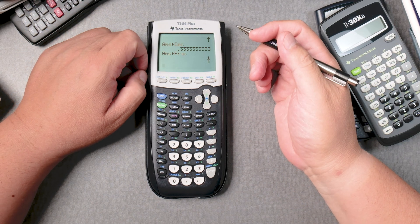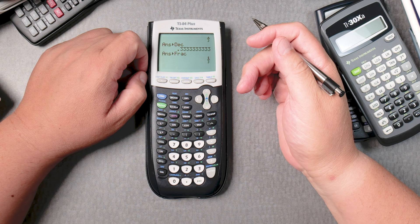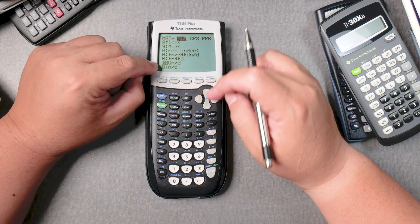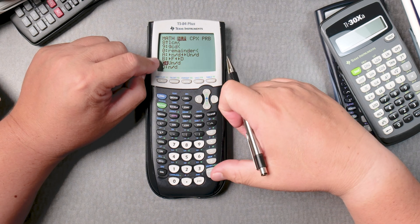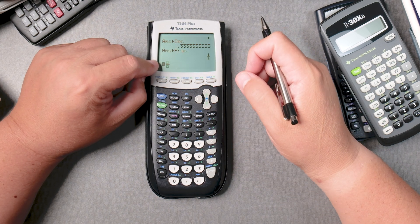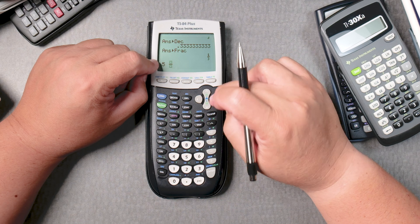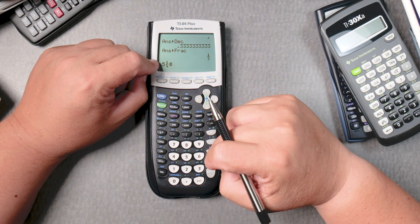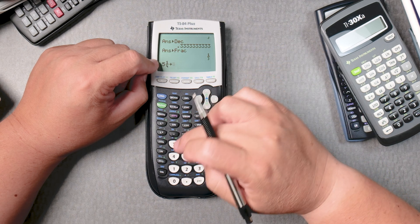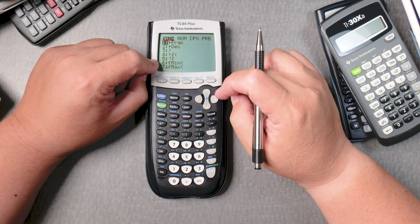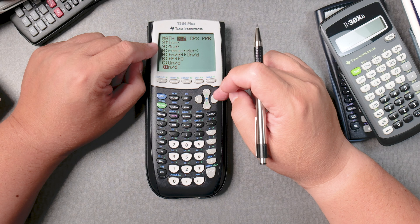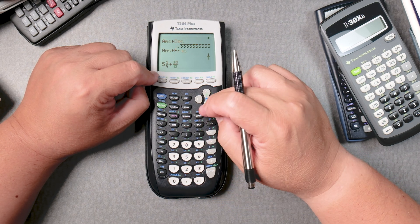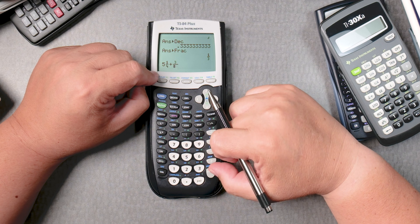So let's go to MATH, NUM, go up. We'll use this one, Un/d, enter. So 5, move over, 1, go down, 4, go across, plus. And then hit MATH again, NUM, go up, choose this one. 3, move down, 8, enter. 45 over 8.